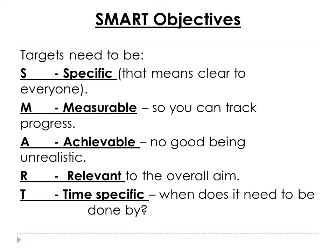When measuring objectives, we need to make sure they are SMART: Specific, Measurable, Achievable, Relevant, and Time-specific. Taking the doctor example — your objectives need to be specific. Saying 'get good A-levels' is not particularly specific. What does 'good' actually mean? Is it measurable? If you say three A's, you know whether you've succeeded — if you get two A's and a B, that objective has not been met.